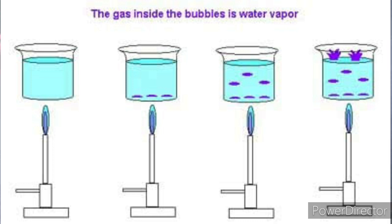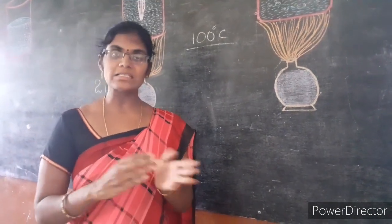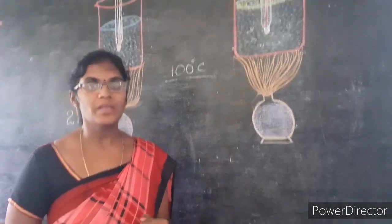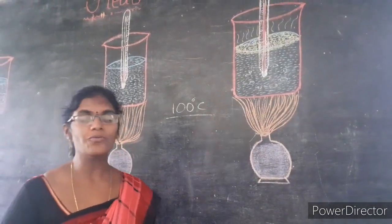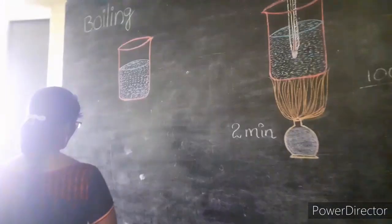When the pressure of the saturated vapor equals atmospheric pressure, the bubbles rise rapidly, reach the surface of the water, and collapse. Water molecules escape from the liquid. This process of converting liquid to vapor continues as long as we supply heat energy — this appears as boiling of water. Now I will explain the definition of boiling.